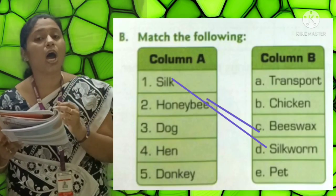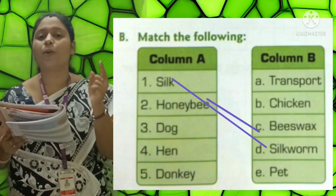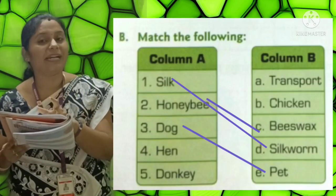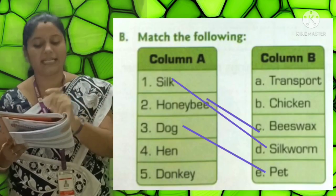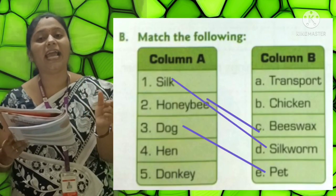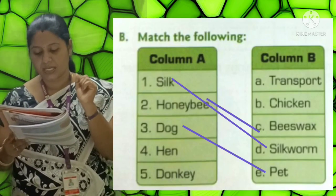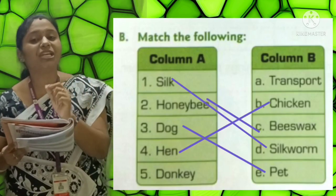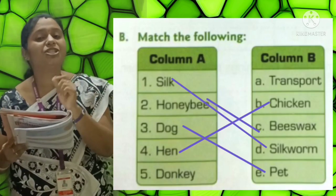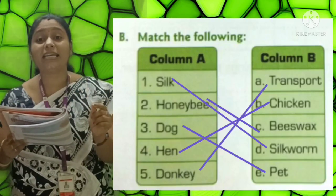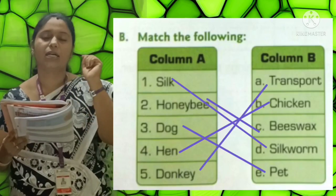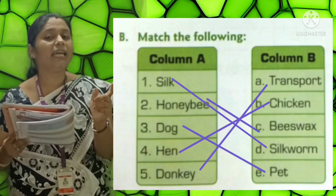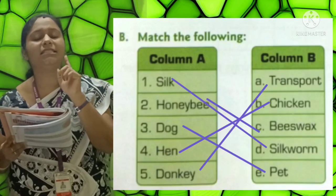Third: Dog - the answer is Pit. Fourth: Hen - the answer is Chicken. Fifth: Donkey - the answer is Transport.